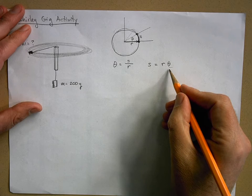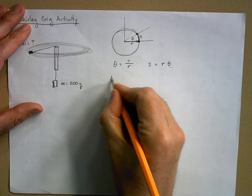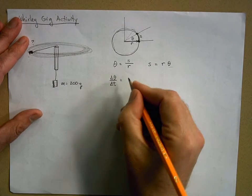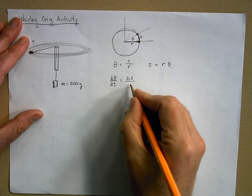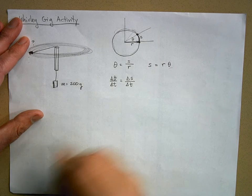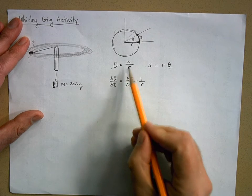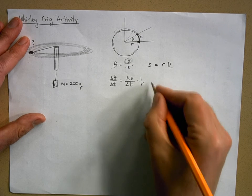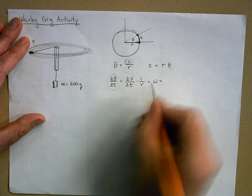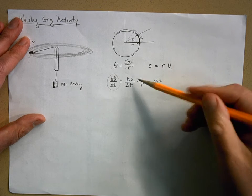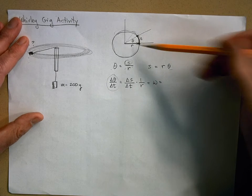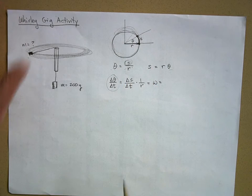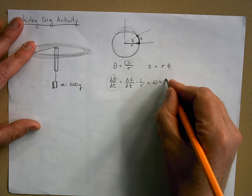If I want to know how fast something is rotating, I look at delta theta over delta t — the rate of change of angle. That equals (delta s over delta t) times one over r. This gives angular velocity omega. Delta s over delta t is speed, so for uniform circular motion, omega equals v over r.